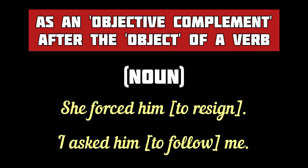In addition, an infinitive may also come as an objective complement — it may come after the object of a transitive verb to complete its meaning. For example: 'She forced him to resign.' 'To resign' is an infinitive coming as the objective complement of the object 'him' of the transitive verb 'forced.' 'I asked him to follow.' Here 'to follow' is an infinitive and the objective complement of 'him,' with 'asked' being the transitive verb.